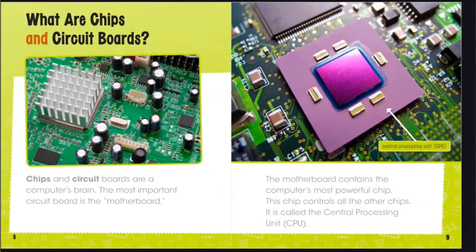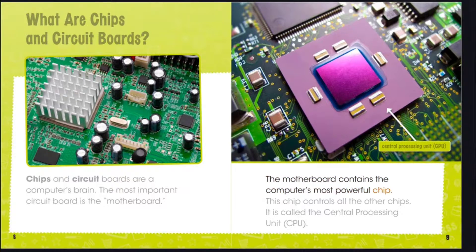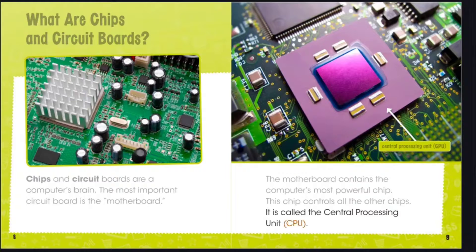What are chips and circuit boards? Chips and circuit boards are a computer's brain. The most important circuit board is the motherboard. The motherboard contains the computer's most powerful chip. This chip controls all the other chips. It is called the Central Processing Unit, or CPU.